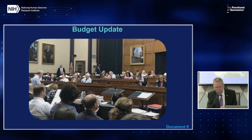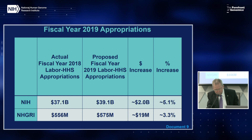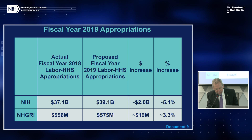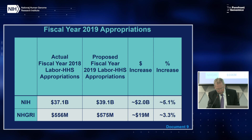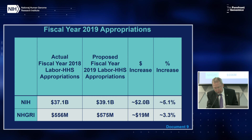The NIH fiscal year 2019 budget numbers are very positive. NIH will likely receive a $2 billion increase in fiscal year 2019, reflecting a 5.1% increase. The new bill has set aside almost $800 million of that $2 billion for specific areas of emphasis, including Alzheimer's disease research, cancer research, the BRAIN Initiative, and the All of Us Research Program. Assuming the House passes the bill and the President signs it, NHGRI's budget would increase to $575 million in fiscal year 2019 — a $19 million or 3.3% increase. We are extremely appreciative of Congress's increasing support of NIH and NHGRI.